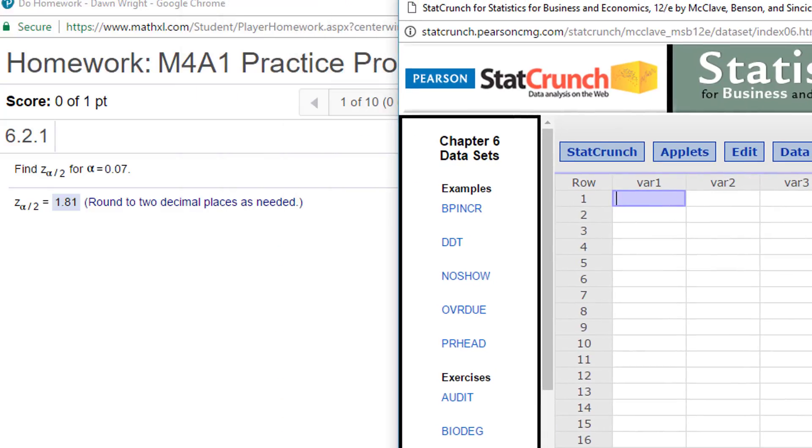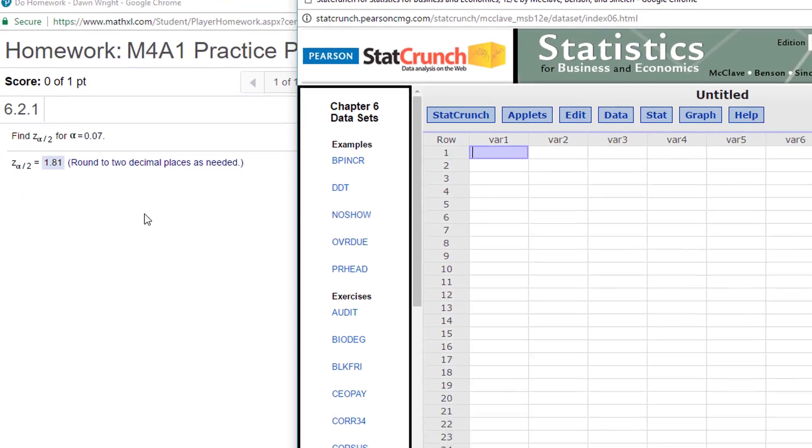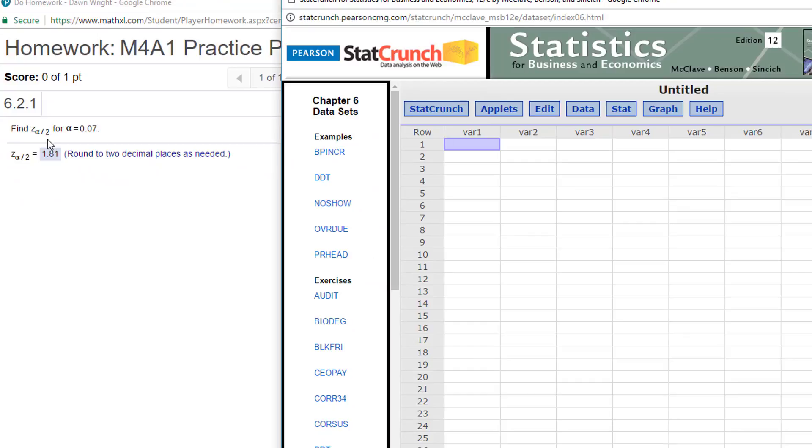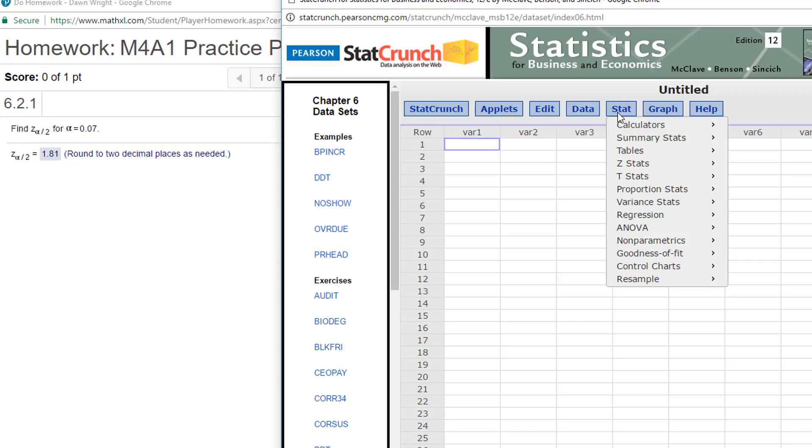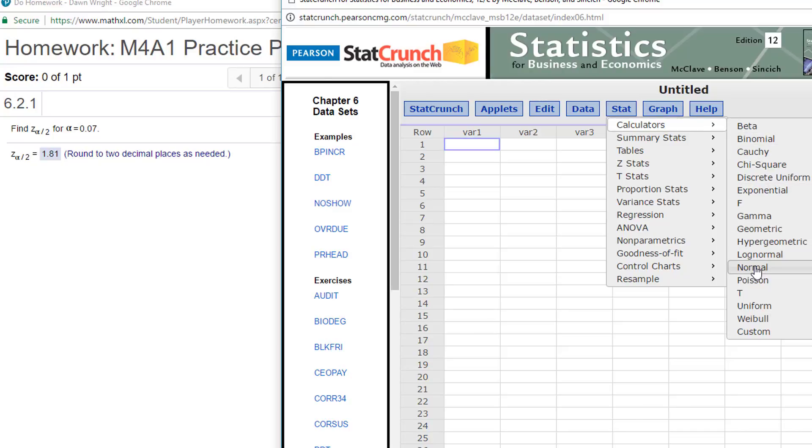Now I've got StatCrunch open, and we're given Z. Z tells us that this is a normal distribution problem. Remember we've got Z and T and F, so Z is a normal. So I'm going to go to Stat, Calculators, Normal.